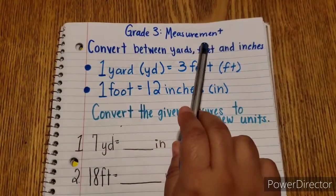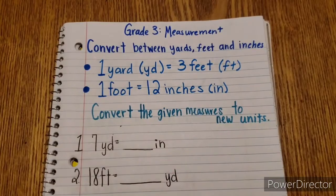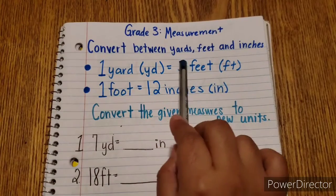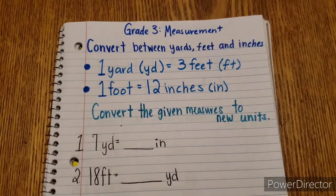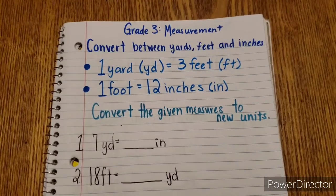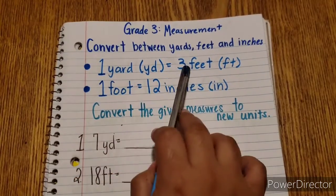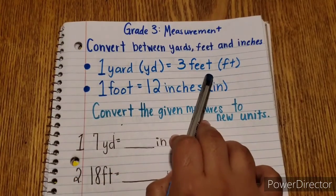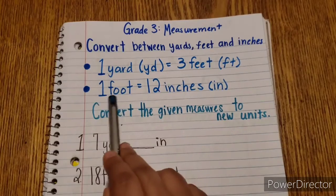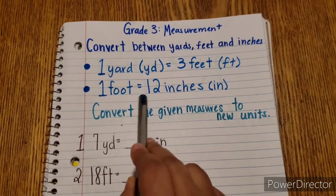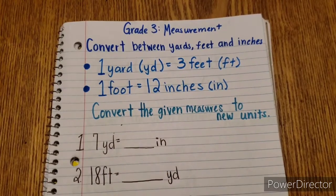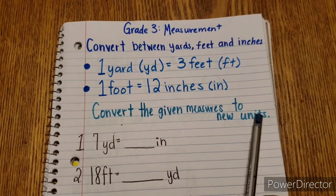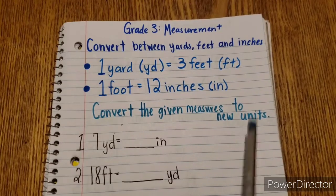Let's get started with grade 3 measurement. We are going to convert between yards, feet, and inches. So here I have: 1 yard equals 3 feet, and 1 foot equals 12 inches. We need to convert the given measures to new units.